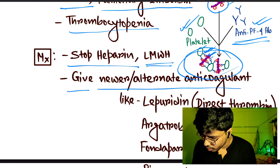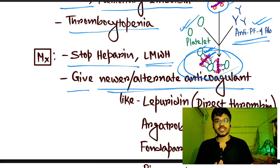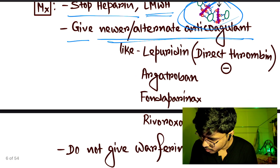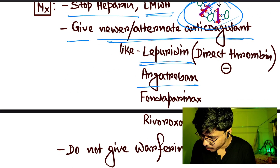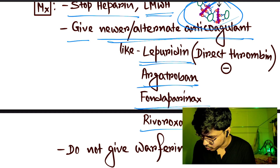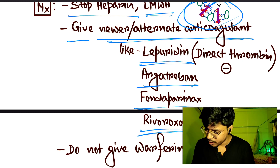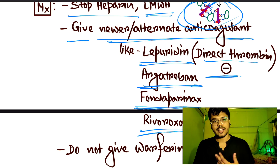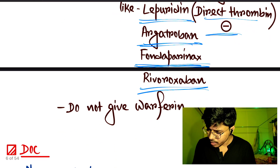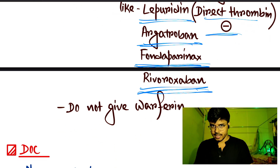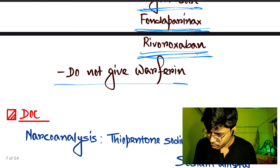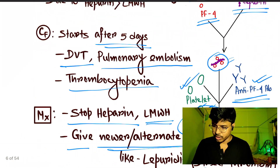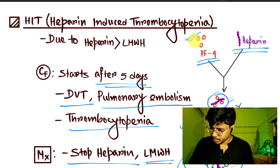Give a newer anticoagulant as the drug of choice for HIT. Options include lepirudin and argatroban — direct thrombin inhibitors — fondaparinux, which is an indirect thrombin inhibitor that selectively binds Factor Xa, and rivaroxaban, a Factor Xa inhibitor. Do not give warfarin.